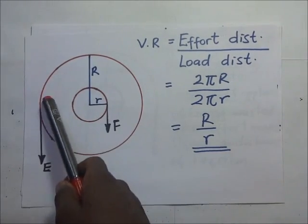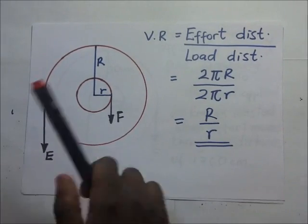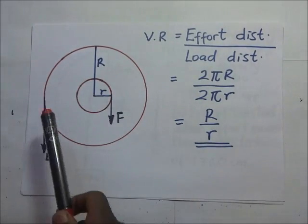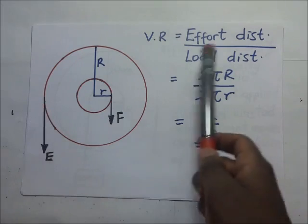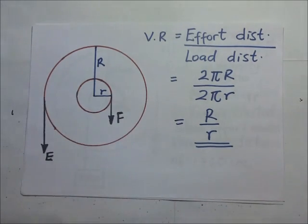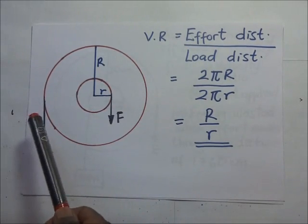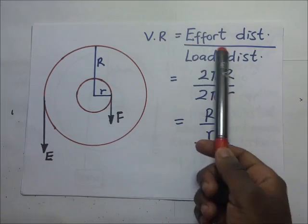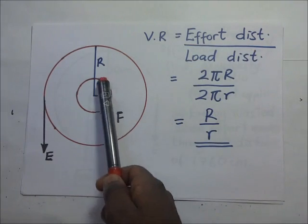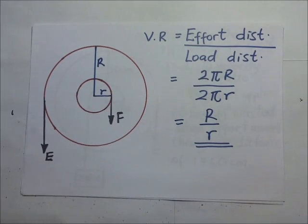When you make one revolution of turning this, the circumference of the large circle is equivalent to the distance the effort will have moved. Likewise, the load distance is going to be equivalent to the distance moved by the circumference of the small circle.